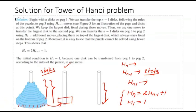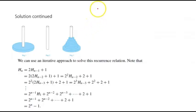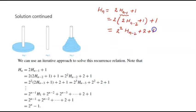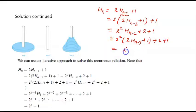To solve this recurrence we use iterative substitution. H(n) = 2·H(n-1) + 1. Substituting H(n-1) = 2·H(n-2) + 1 gives 2²·H(n-2) + 2 + 1. Substituting again, H(n-2) = 2·H(n-3) + 1, gives 2³·H(n-3) + 2² + 2 + 1.